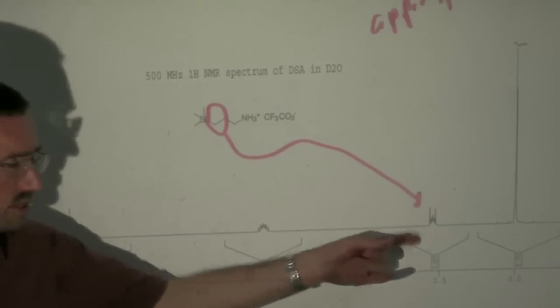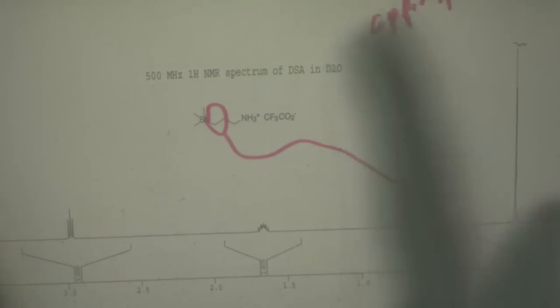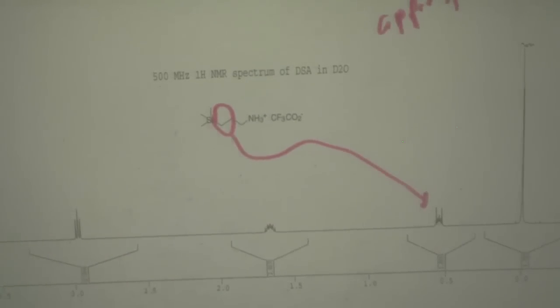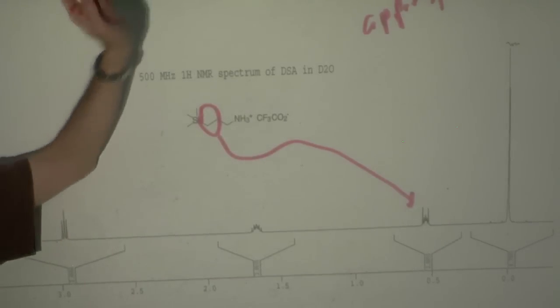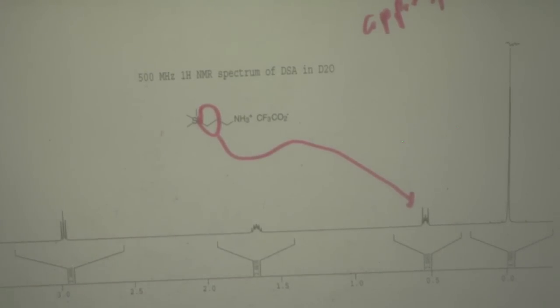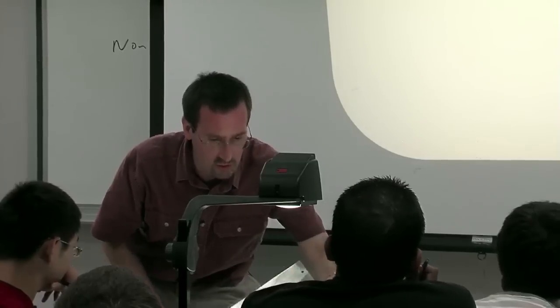I would just call these peaks multiplets and list their range. I'd call the cleaner one an apparent triplet. We don't need to explain exactly why, but we need to know this is a non-first-order system. Often we can get away describing non-first-order systems as first order, but not always. Let me show you some other non-first-order behavior.